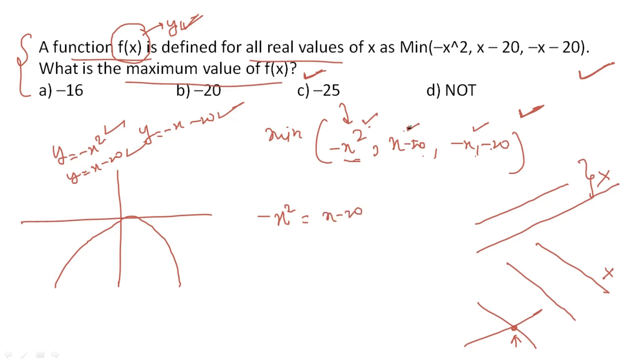This equation has positive slope and y-intercept of minus 20. So minus x squared equals x minus 20 becomes x squared plus x minus 20. Breaking it down: x squared plus 5x minus 4x minus 20. Taking common factors, you get x plus 5 and x minus 4. So x values are 4 and minus 5.